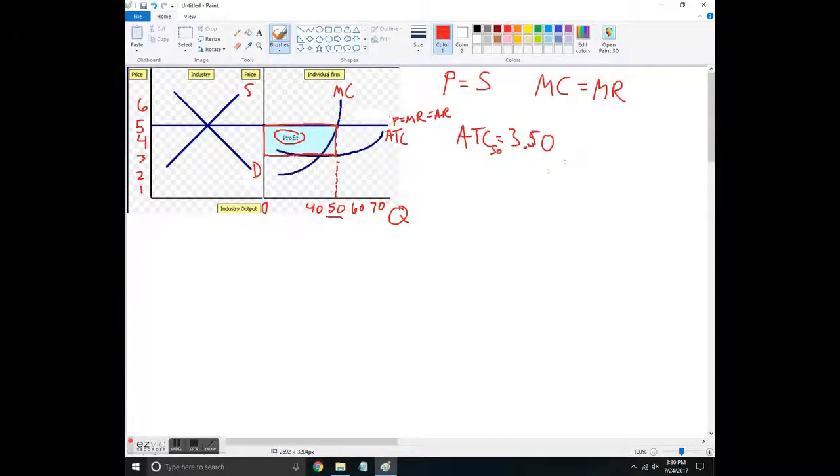So it's from $3.50 - this right here is a dollar fifty. To go from $3.50 up to five, that's a dollar fifty times how many units, so it's like the profit per unit.